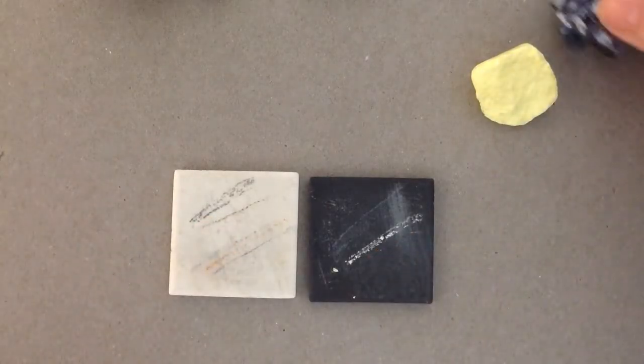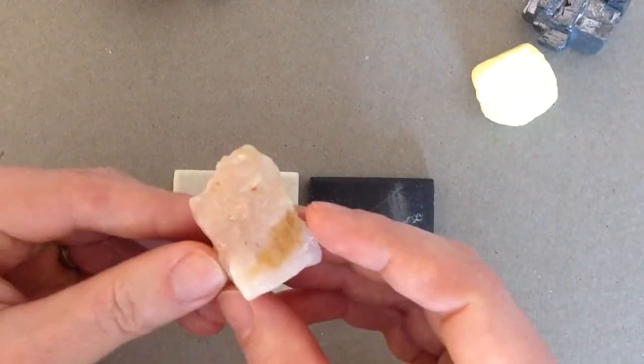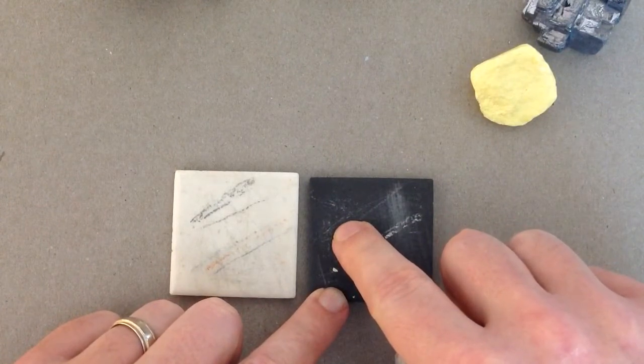Now, some minerals do not give a streak at all or a very faint streak like quartz, will give you kind of almost no streak at all.